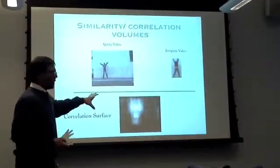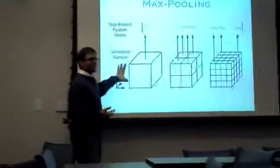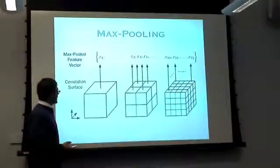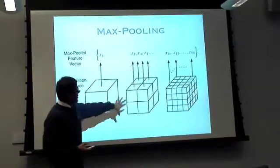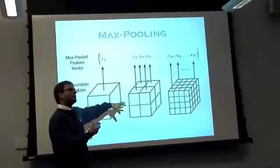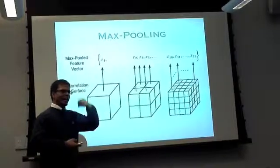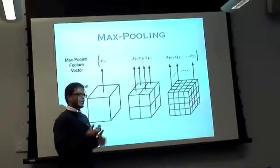In order to get a good description of this correlation surface, we do something called max pooling. Max pooling basically involves forming an octree over a three-dimensional volume. Initially, if this is my correlation volume with x, y, and t axes, I pick out the max value at this resolution. Then I increase the resolution and pick out max values from eight different parts, and each block gets split up into eight more cubes.